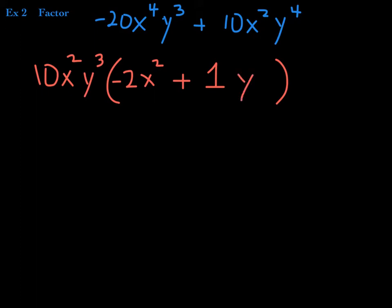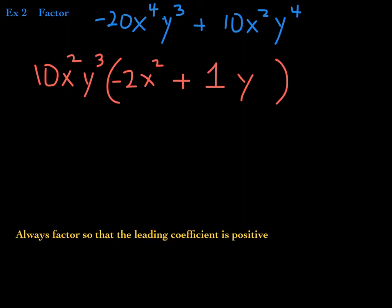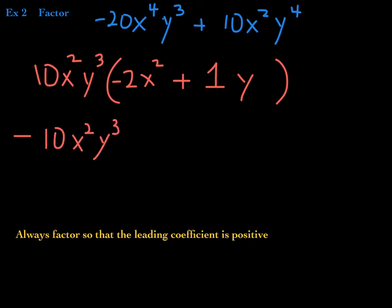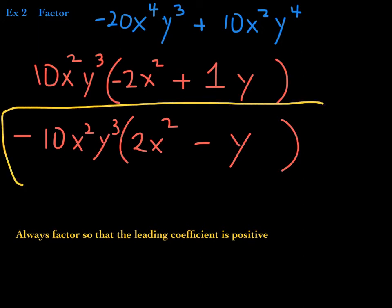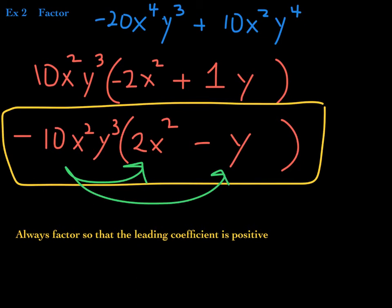We're not done here because we always try to factor so that the leading coefficient is positive. The leading coefficient was negative 20, now it's negative 2 — we don't like that. We continue to factor by factoring out a negative sign, or negative 1, out of both terms. When we factor out the negative, these two terms change sign — this is now positive 2x squared minus 1y. This is now fully factored. Distribute to check and you'll get the original polynomial back.